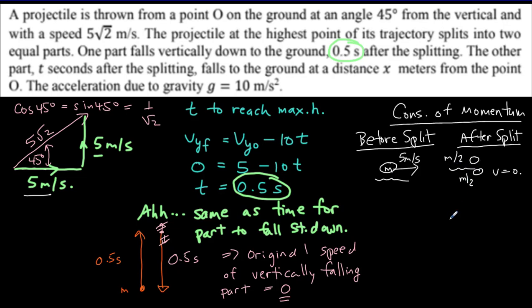So whatever momentum we had here, it's got to be the same here. And because it's got half the mass, it has to have twice the speed, 10 meters per second. So 10 times m over 2 is equal to 5 times m. So now we know what that upper mass was doing after the split.